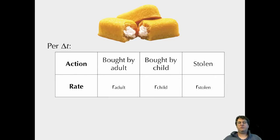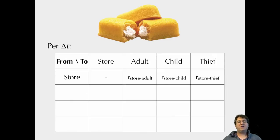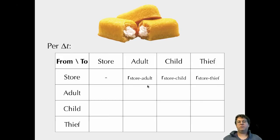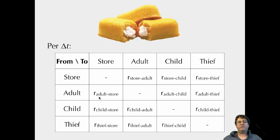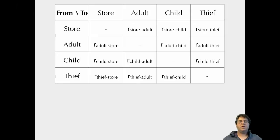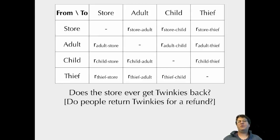You can think of those as rates — changes over time. The adult rate is just the rate at which the Twinkie is bought by an adult. I can expand that to think about leaving from the store to different places: to an adult, to a child, to a thief. So I have the rate of going from a store to an adult, from a store to a child, or from the store to a thief.